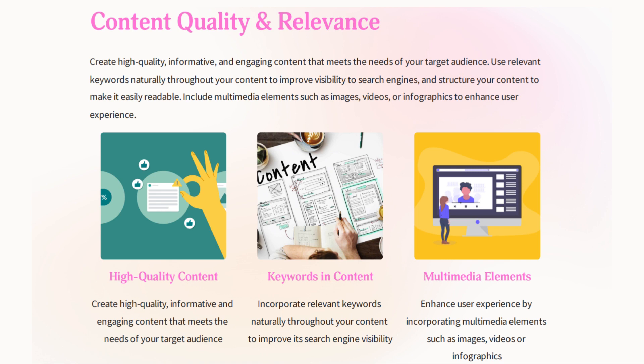Make sure your content is relevant, which brings us to content quality and relevance. If you can create high-quality, engaging, informative content that meets the needs of your target audience, you're going to rank higher. Google wants to show good, relevant content in search results, so if your website provides quality information, they are happy to rank you higher. If you include relevant keywords naturally throughout the content, it's going to improve visibility in the search engines. Additionally, ensure that it is readable — when you read it out loud, does it flow well? Does it make sense? Is it well organized?